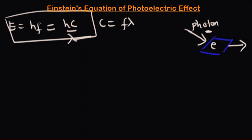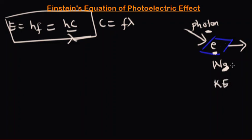Now let's manipulate this equation to obtain several equations that will help us solve questions involving photoelectric effect. When this photon strikes the electron, it gives all its energy to the electron. But there is a minimum energy that keeps the electron bound to the metal surface, known as the work function. The energy absorbed by the electron is used partly to overcome the work function, and the rest is converted to kinetic energy, with which it escapes the surface of the metal.